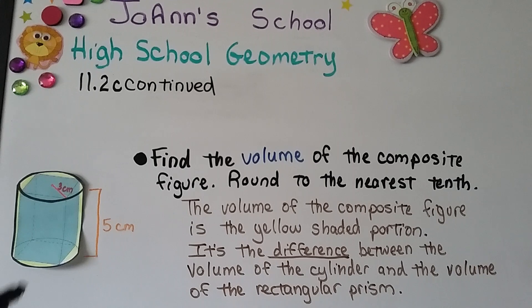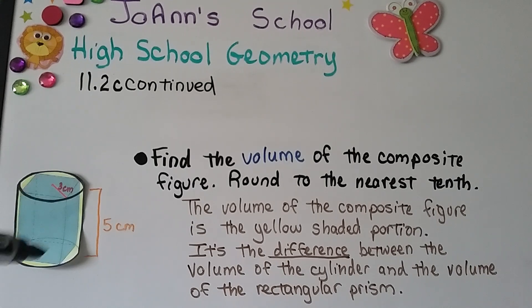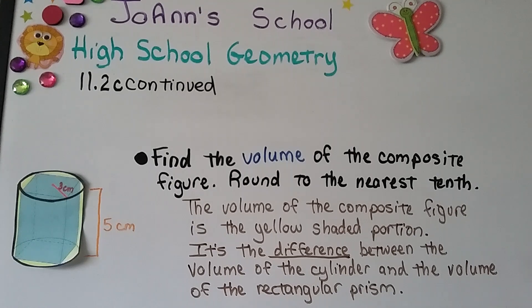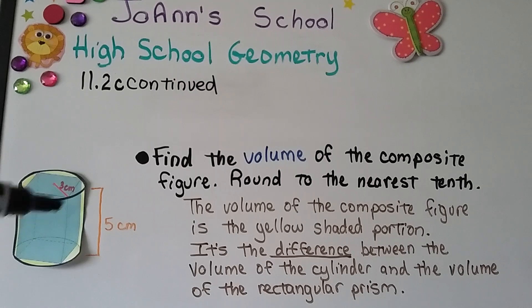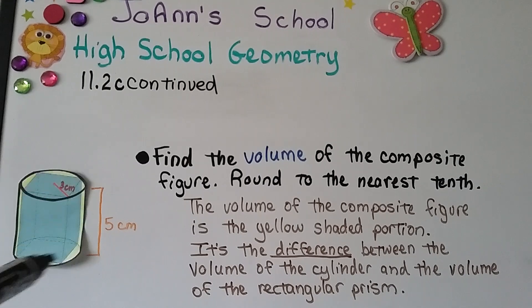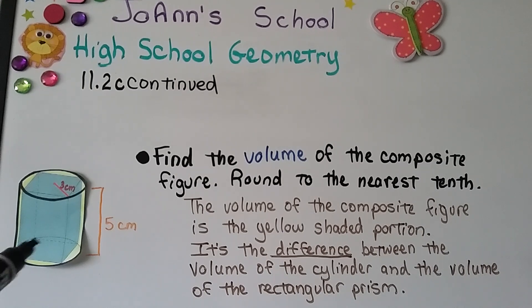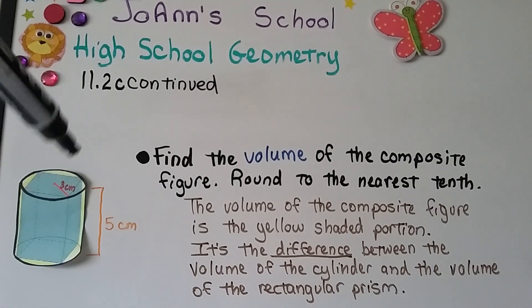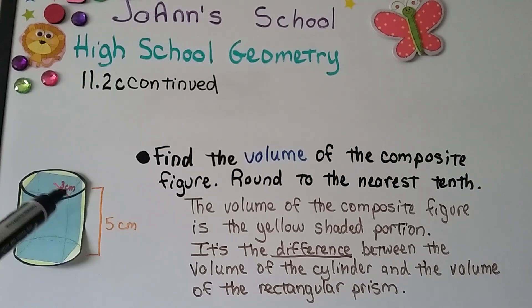Now take a look at this figure. We have a cylinder with a rectangular prism inside of it. We need to find the volume of the composite figure, which is the yellow shaded portion around the edge — the difference between the volume of the cylinder and the volume of the rectangular prism. The cylinder is hollow, the prism is a solid block, and we're looking for the volume around that block. The radius is 3 centimeters and the height of the cylinder is 5 centimeters.